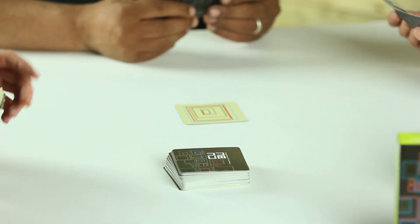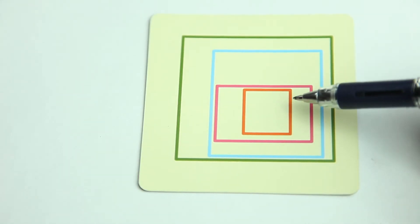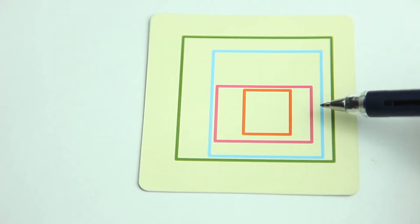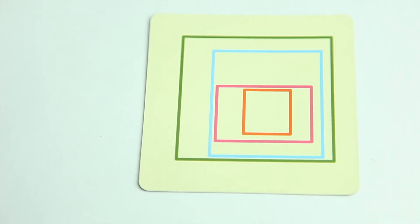Say for example we're going to play off of this card. This card has an orange in the one position, a pink in the two position, a light blue in the three position, and a dark green in the four position.